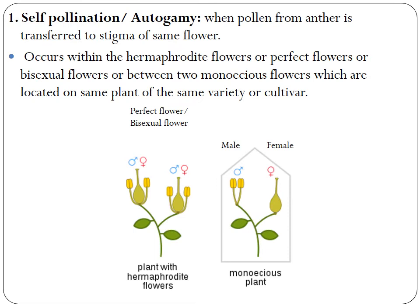Self-pollination or autogamy occurs when pollen grains from the anther are transferred to the stigma of the same flower. It is commonly seen in hermaphrodite or perfect flowers, meaning the flower contains both female parts — style, stigma, ovary — and male parts — anther and filament. It can also occur in bisexual or between two monoecious flowers, where male and female flowers are different but present on the same plant.